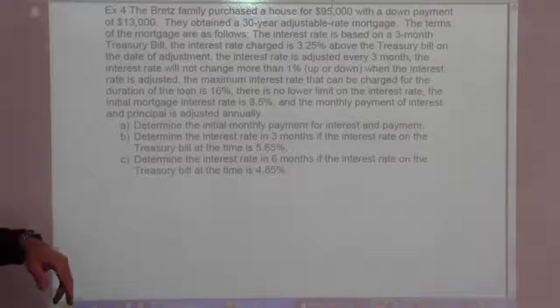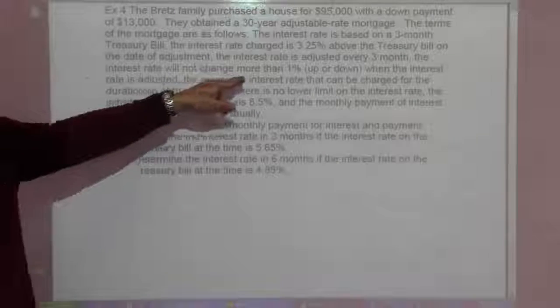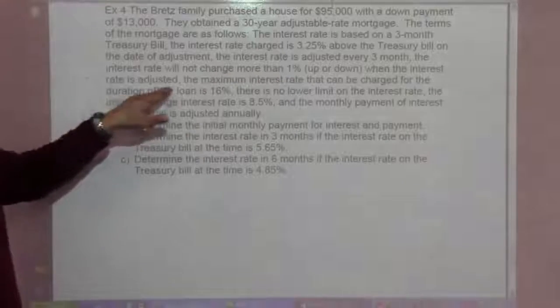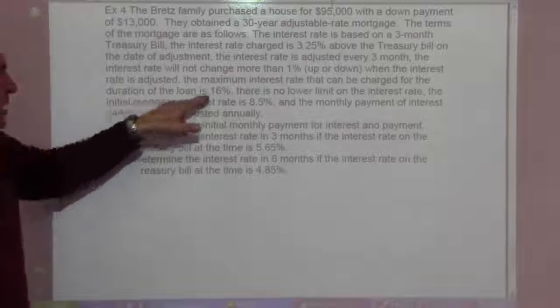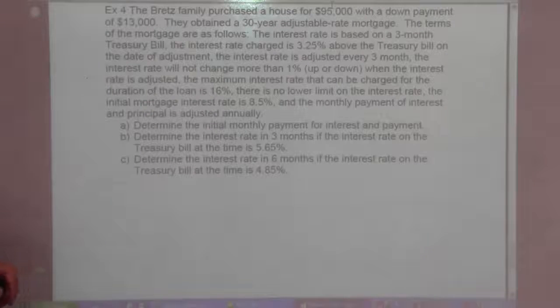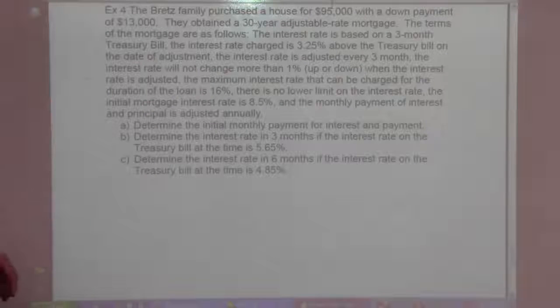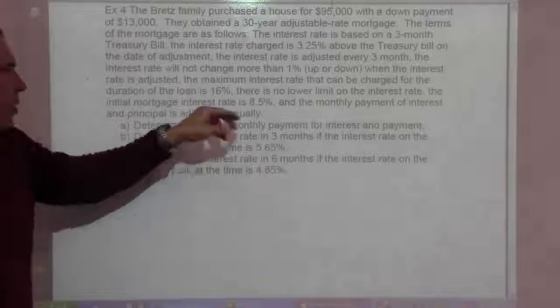Interest rate is adjusted every 3 months. Interest rate will not change more than 1% up or down when the interest rate is adjusted. The maximum interest rate that can be charged for the duration of the loan is 16%, super high. There's no lower limit on the interest rate. The initial mortgage interest rate is 8.5%.